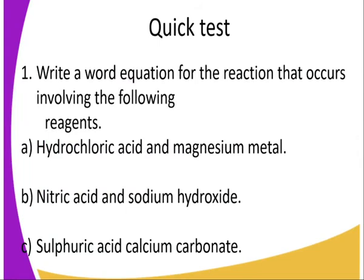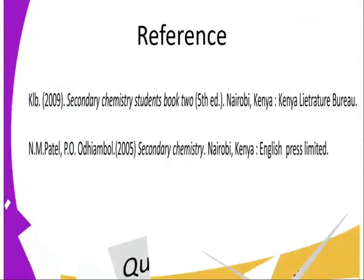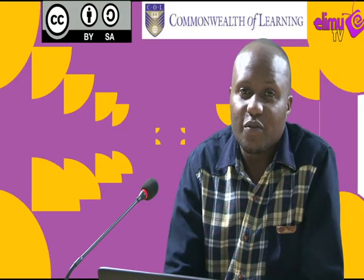Let's do a test to see whether you have understood the concept. Write a word equation for the reaction that involves the following: hydrochloric acid and magnesium metal; nitric acid and sodium hydroxide; sulfuric acid and calcium carbonate. You can also refer to the following resources to better understand the concept. Thank you for viewing.